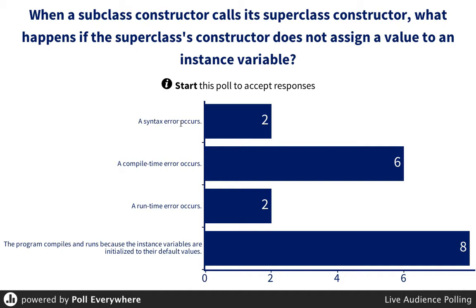There's no rule that says you have to assign a value to an instance variable. You can leave them all to default values, which could be null. C — a runtime error occurs — no. So it's D: the program compiles and runs because the instance variables are initialized to their default values, which could be null or zero. You don't have to assign them in the constructor — it's not required.